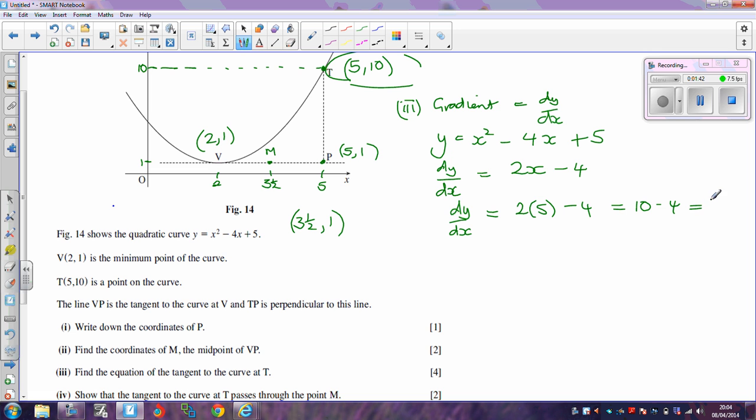So the equation of the tangent is going to be y equals 6x plus c. We need to find out what c is, so we need to substitute the point 5, 10, so y is equal to 10, x is going to be 5, so 6 times 5, that's 30, plus c, which gives us the fact that c is equal to minus 20, which means that the equation of the tangent is y equals 6x minus 20.